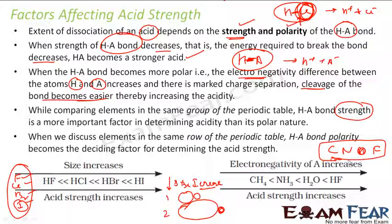When you move in the row, strength is totally irrelevant because the size doesn't vary that much, but the polarity changes a lot. So when you're talking about elements or acids in the same row, polarity plays a critical role in determining the acid strength.